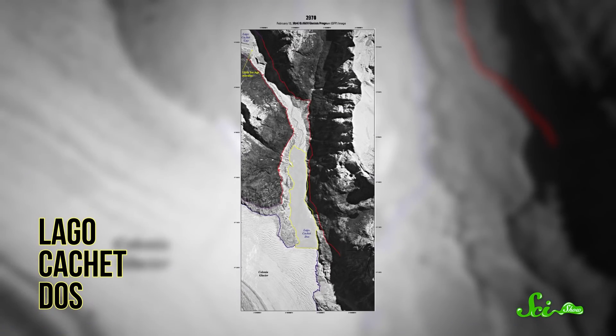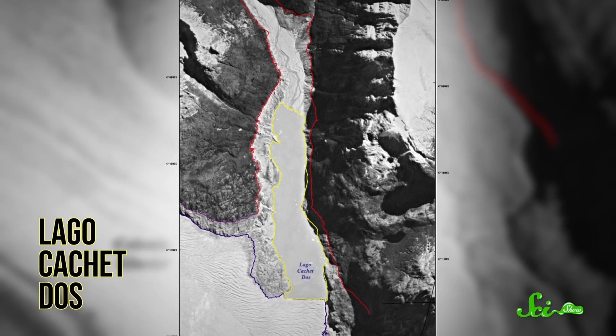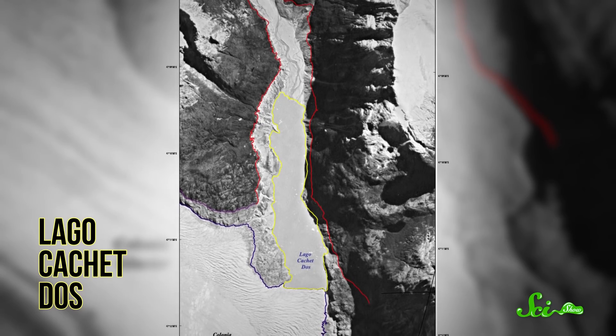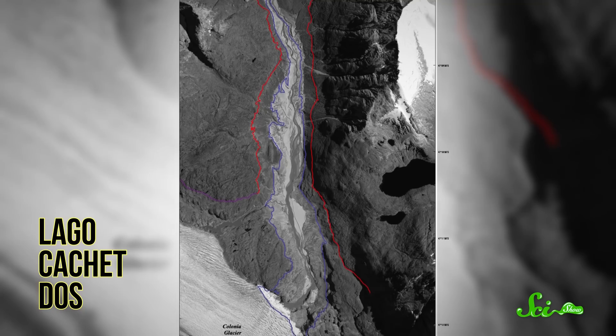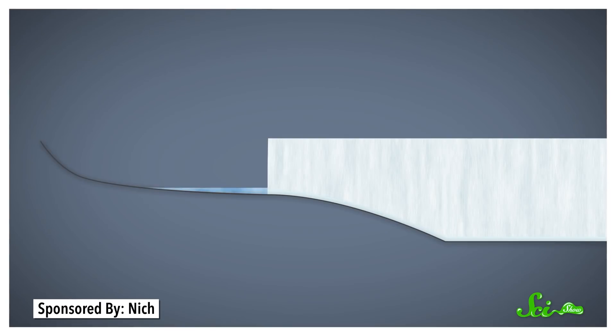Lago Cachet Dos is a glacial lake that fills with melting ice from the Colonia Glacier. Normally, this glacier acts as a dam to keep the lake in place, but if the lake gets too full, things reach a breaking point. As the lake fills with water and pressure builds, water can start wearing through the ice.